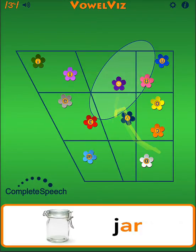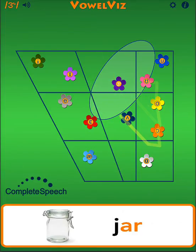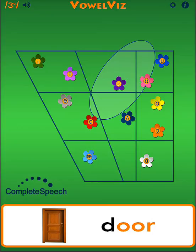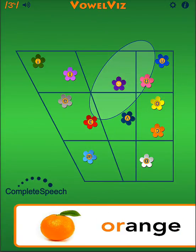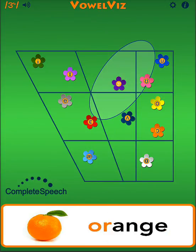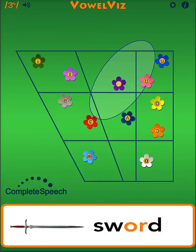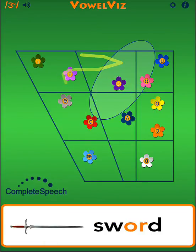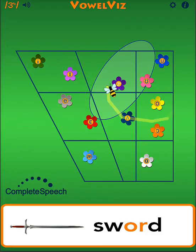The vocalic R, OR, should transition from open O to R. OR, door, orange, sword. Again, here we see a clear transition between these two sounds, AH and ER.